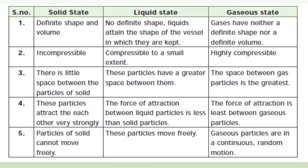Solid state has a definite shape and volume. Solids are incompressible. There is very little space between the particles of a solid, and these particles attract each other very strongly. Particles of solid cannot move freely. In a liquid state, a liquid has no definite shape — it can attain the shape of any vessel in which it is kept. Liquids are compressible to a small extent. Liquid particles have greater space between them, and the force of attraction is less than in solids. These particles move very freely.